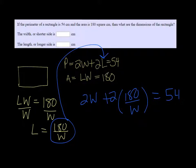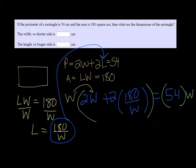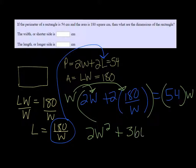And we go ahead and we solve it for W. Now to solve for W, we need to get it out of the denominator. So I'm going to multiply both sides of the equation by W to do that. So we get, distributing, we get 2w squared plus, now the W's on the second one are going to divide out, and we just get 2 times 180, which is 360. That equals 54w.